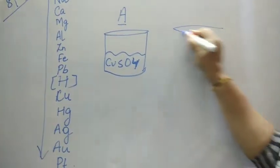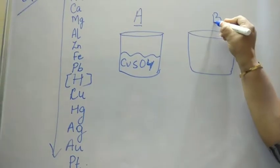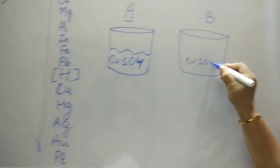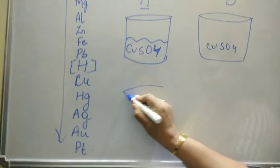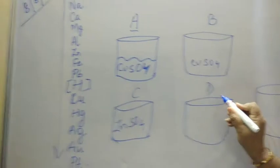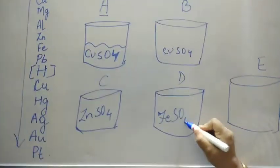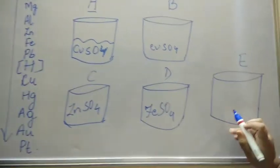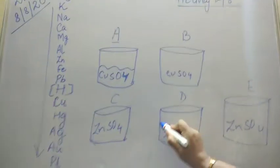Then beaker number B, and here they took the solution again CuSO4. Beaker B. Now beaker number 3, beaker number C, we will take ZnSO4. Beaker number D, that is FeSO4. And beaker number E, that is ZnSO4. So these are the solution which we have filled in the beaker.